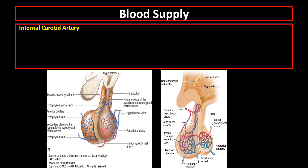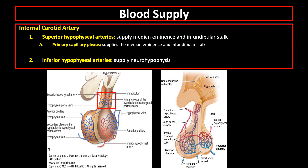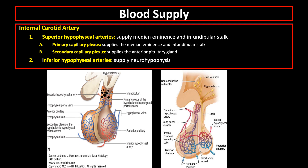The blood supply of the pituitary gland comes from the internal carotid artery. Along its path, it gives branches to the pituitary gland: the superior hypophysial arteries, which supply the median eminence and infundibular stalk, and the inferior hypophysial arteries, which provide blood mainly for the posterior pituitary gland. The superior arteries divide into a primary plexus of fenestrated capillaries that irrigate the stalk and median eminence. These capillaries rejoin to form venules that branch again as a larger secondary capillary plexus in the adenohypophysis, making up the hypothalamic-hypophysial portal system.